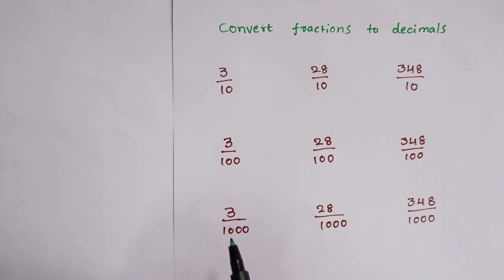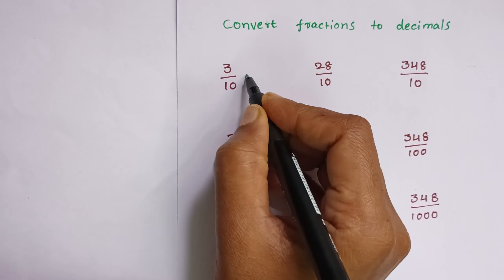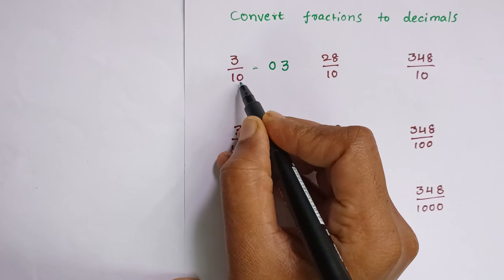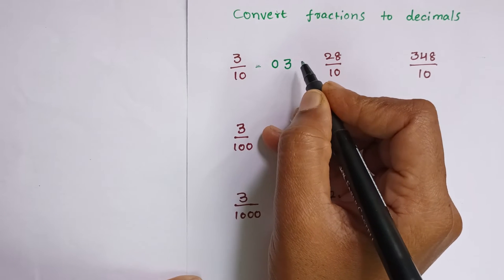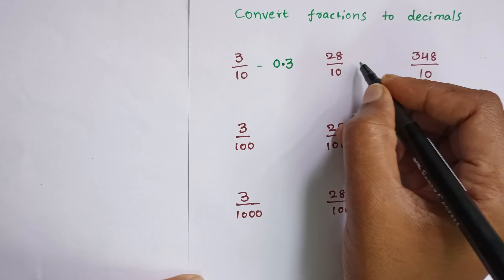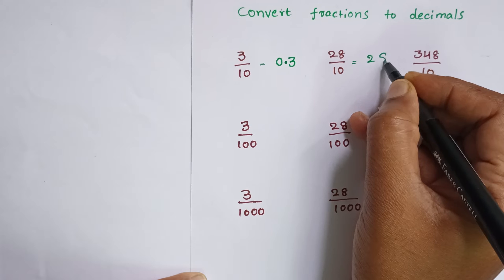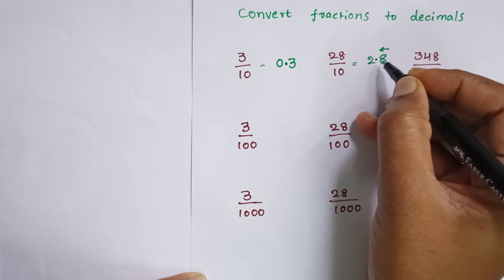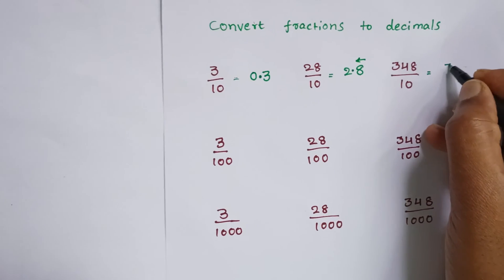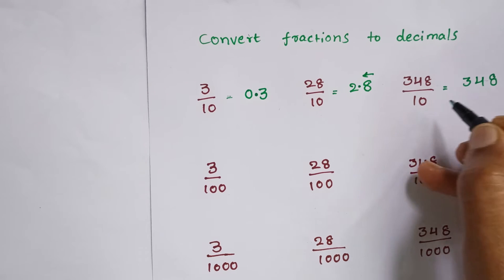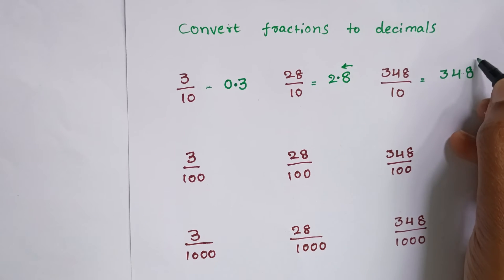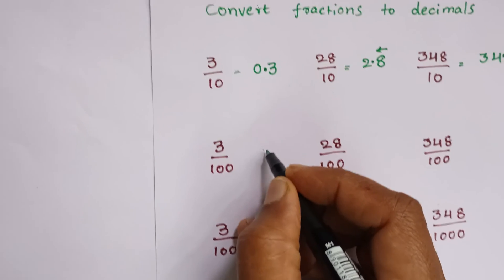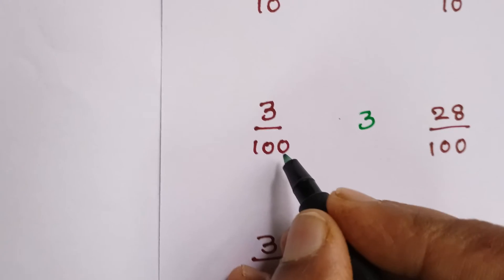Converting fractions to decimals. Write the number as it is. For one zero after one digit, from left to right, you can keep the decimal. Write the number as it is for one zero after one digit, keep the decimal. Write the number, but two zeros.